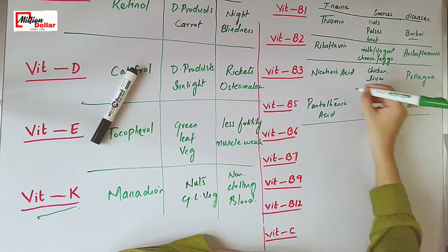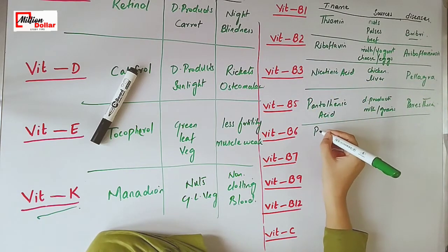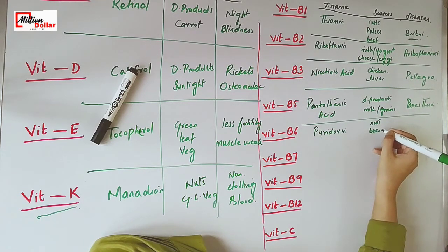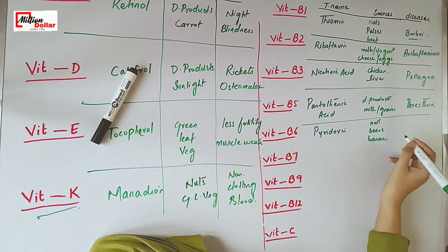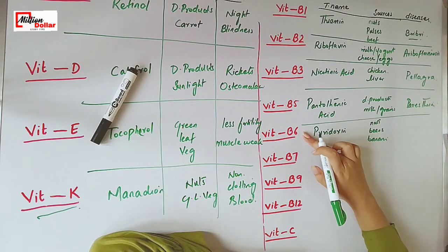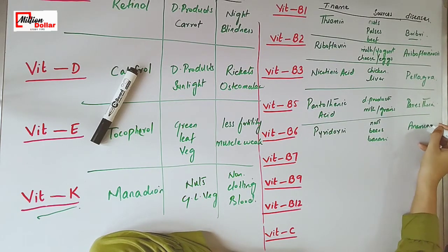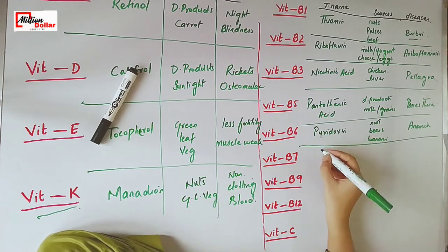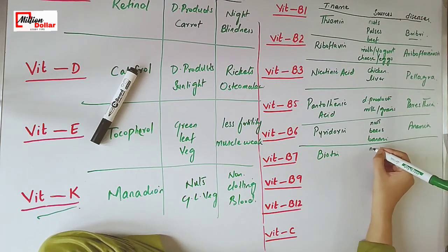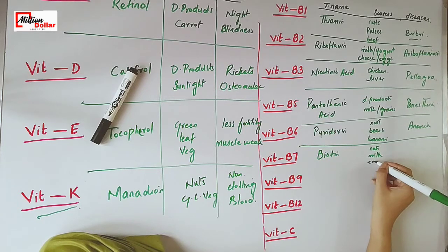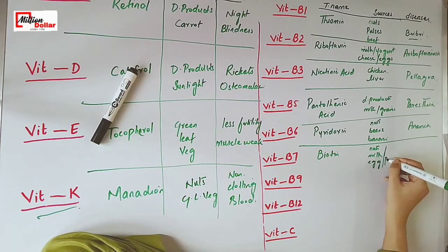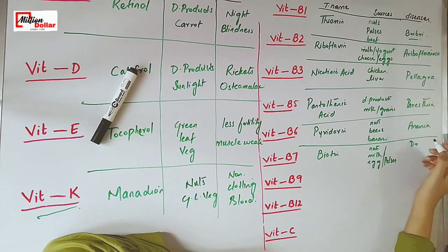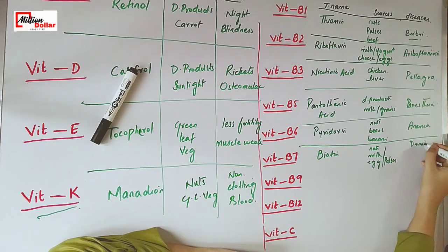The technical name of vitamin B6 is pyridoxine. Nuts, beans, especially soya beans, bananas, and fish are good sources of vitamin B6. Anemia is caused by the deficiency of this vitamin. The technical name of vitamin B7 is biotin. Nuts, milk, eggs, and pulses are good sources of vitamin B7. The disease caused by the deficiency of vitamin B7 is dermatitis.